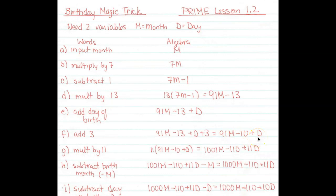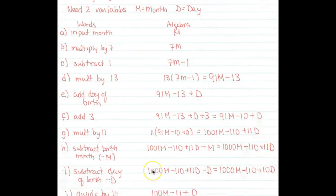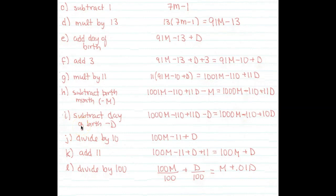This is what I'm left with after that step. Step g says multiply by 11, so I've got 11 times this whole thing. I'm going to distribute again, giving me 1001m minus 110 plus 11d. Next it says 'subtract the birth month,' so I'm going to subtract m. I have 1001 m's and I subtract 1 m, leaving me 1000m. The other terms stay the same.